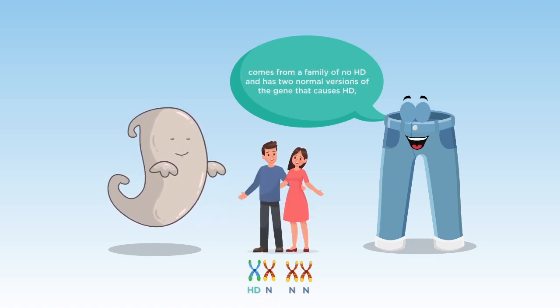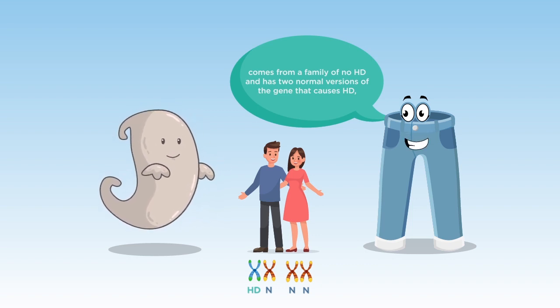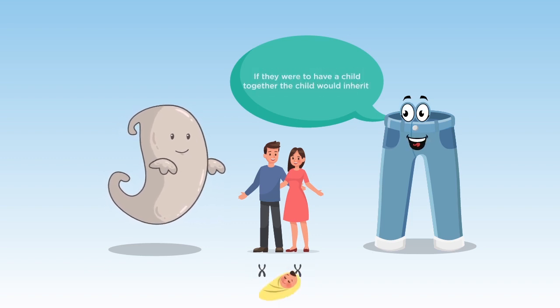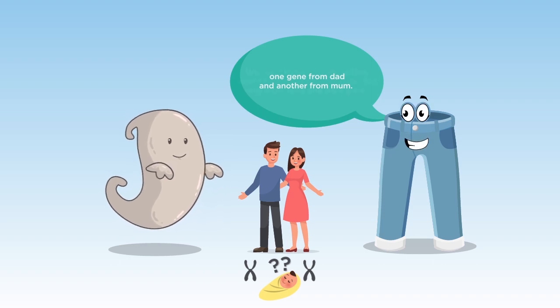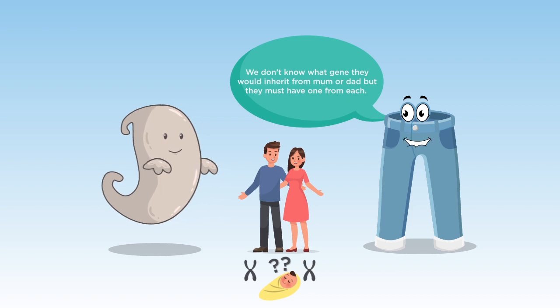So, she has no risk of getting HD or passing it on. If they were to have a child together, the child would inherit one gene from dad and another from mom. We don't know what gene they would inherit from mom or dad, but they must have one from each. This leads to four possible outcomes for the child.